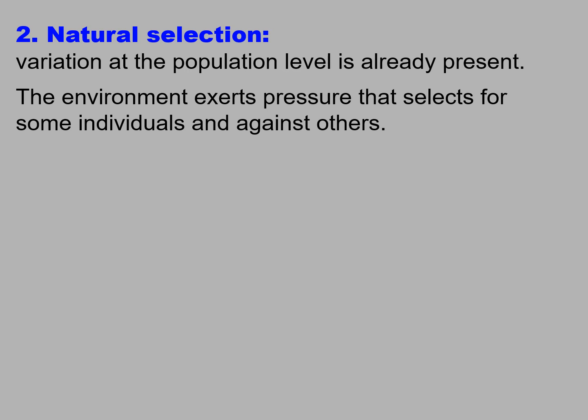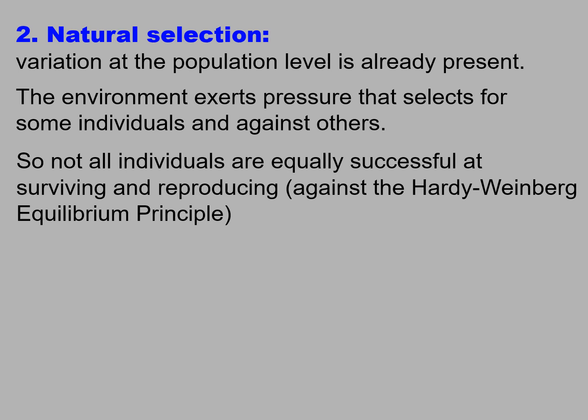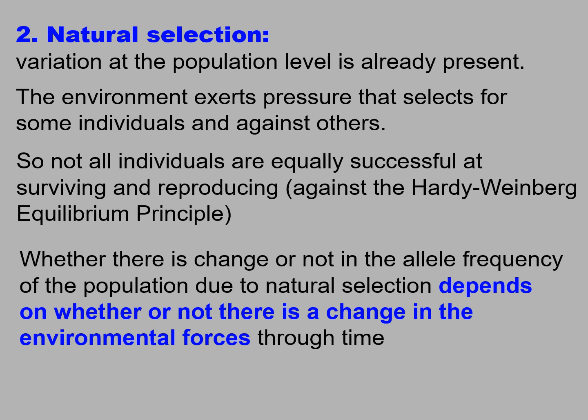Natural selection describes how variation at the population level is already present. The environment exerts pressure that selects for some individuals and against others, so not all individuals are equally successful at surviving and reproducing, which goes against the Hardy-Weinberg Equilibrium Principle. Whether there's change in the allele frequency of the population due to natural selection depends on whether or not there's a change in the environmental forces through time.